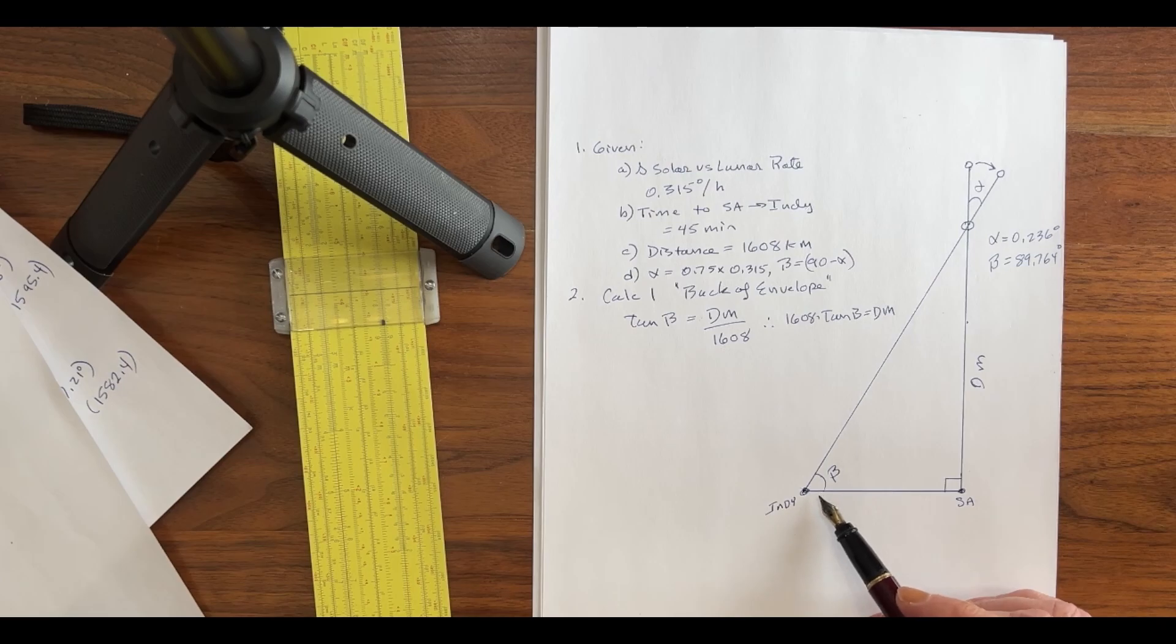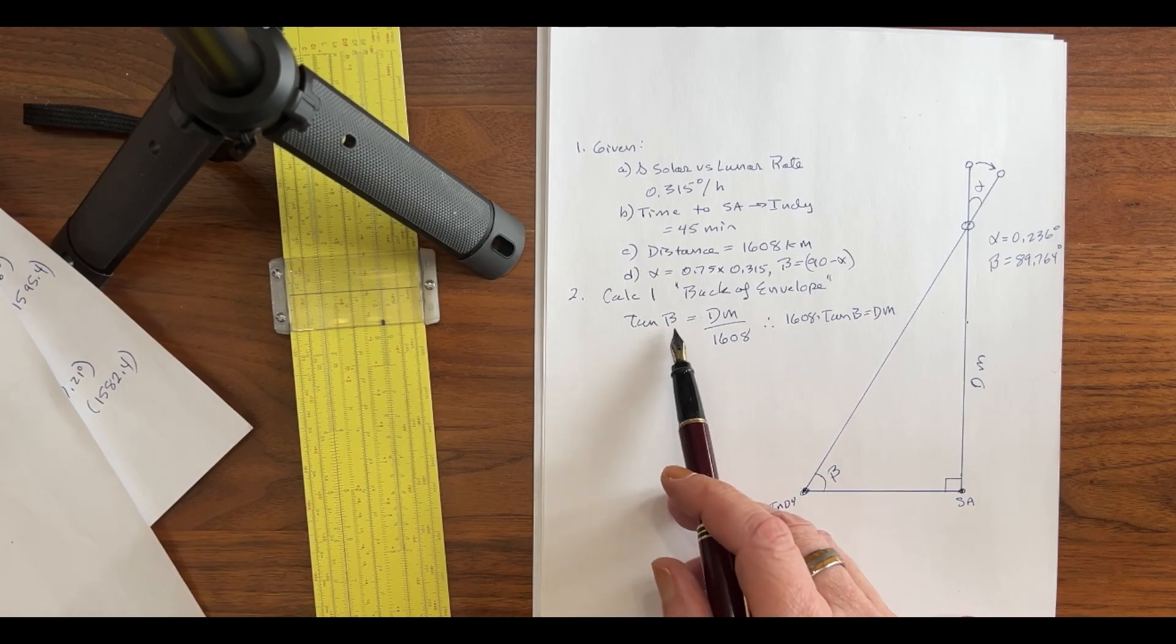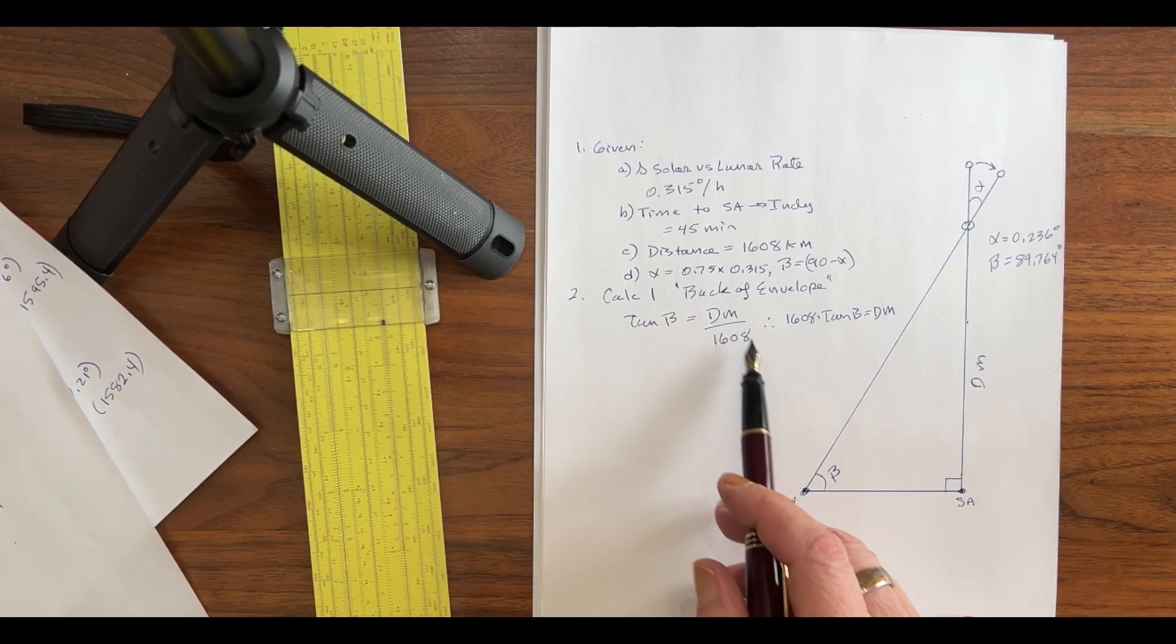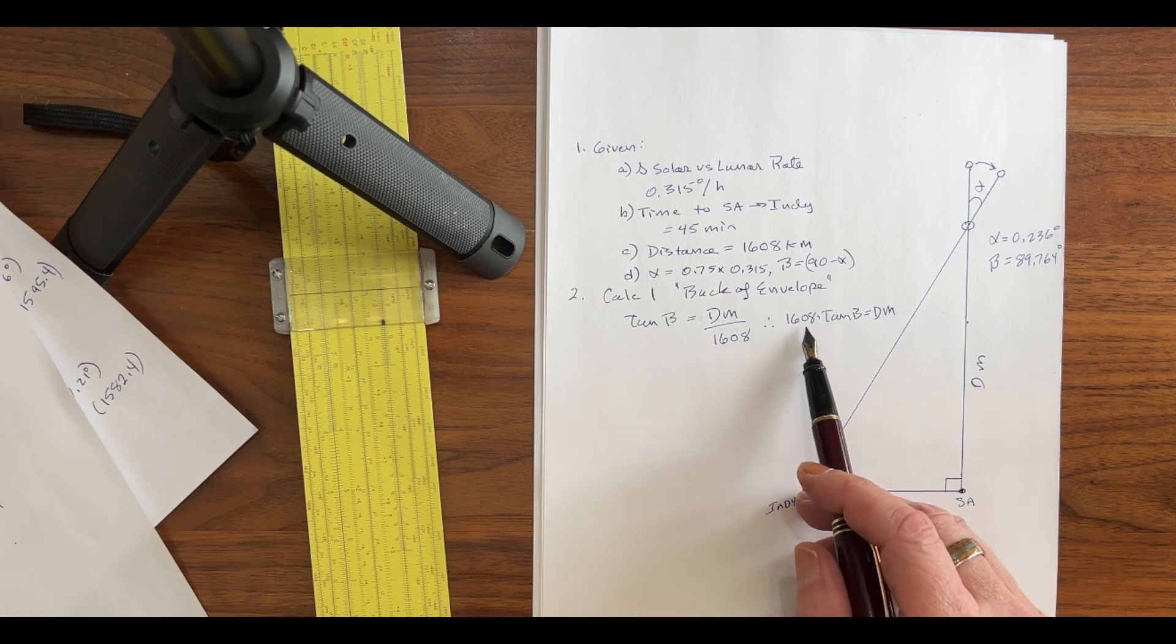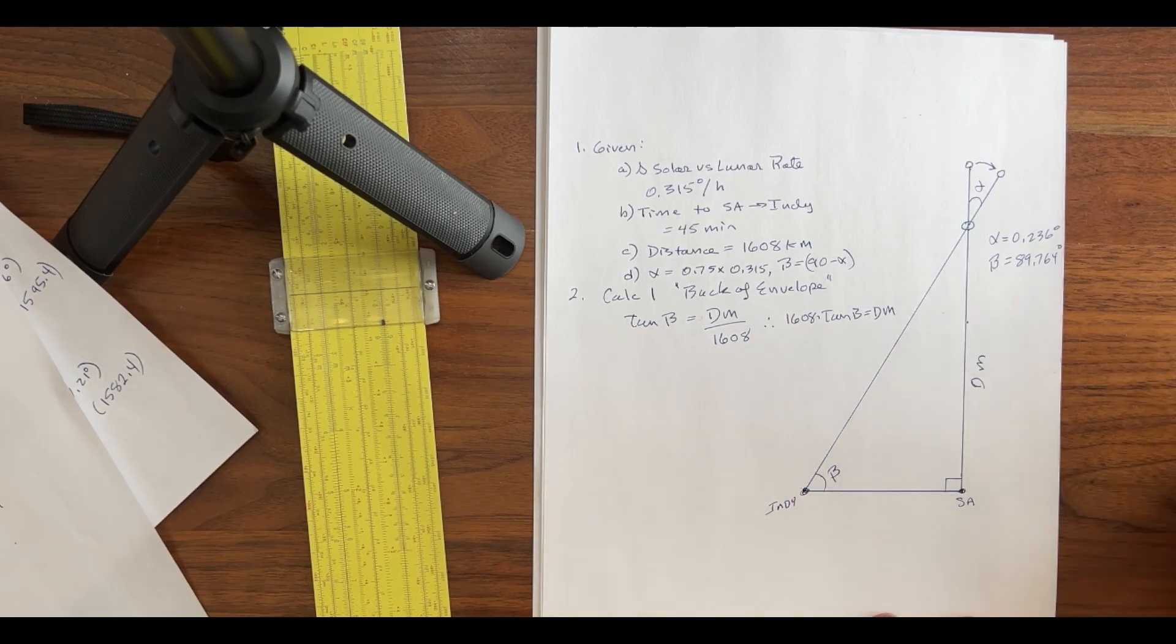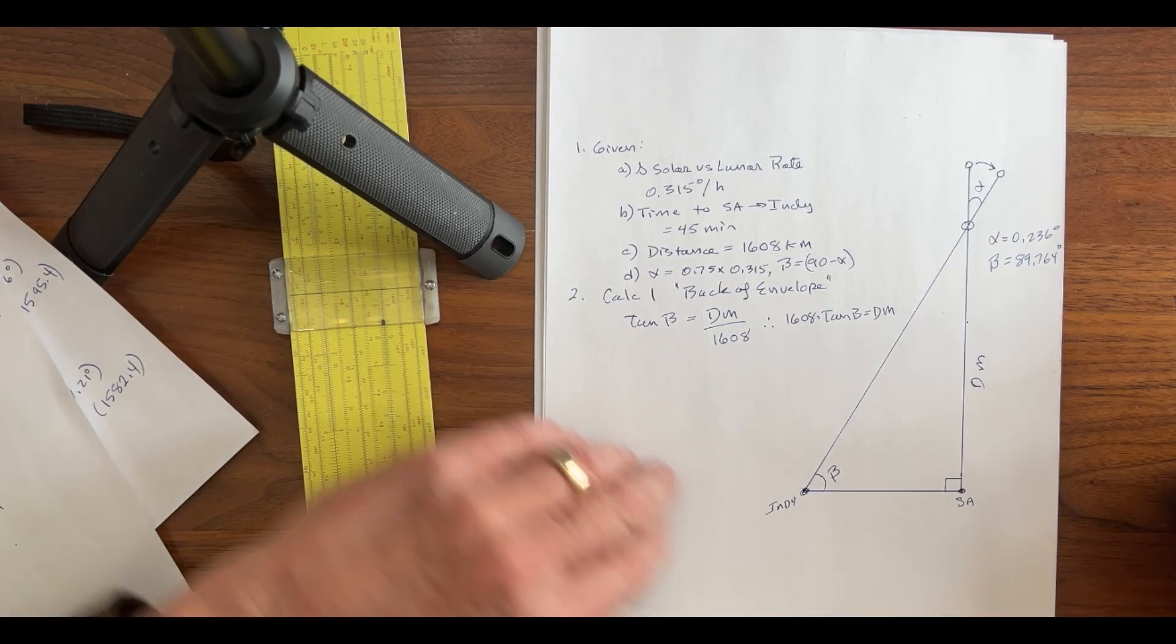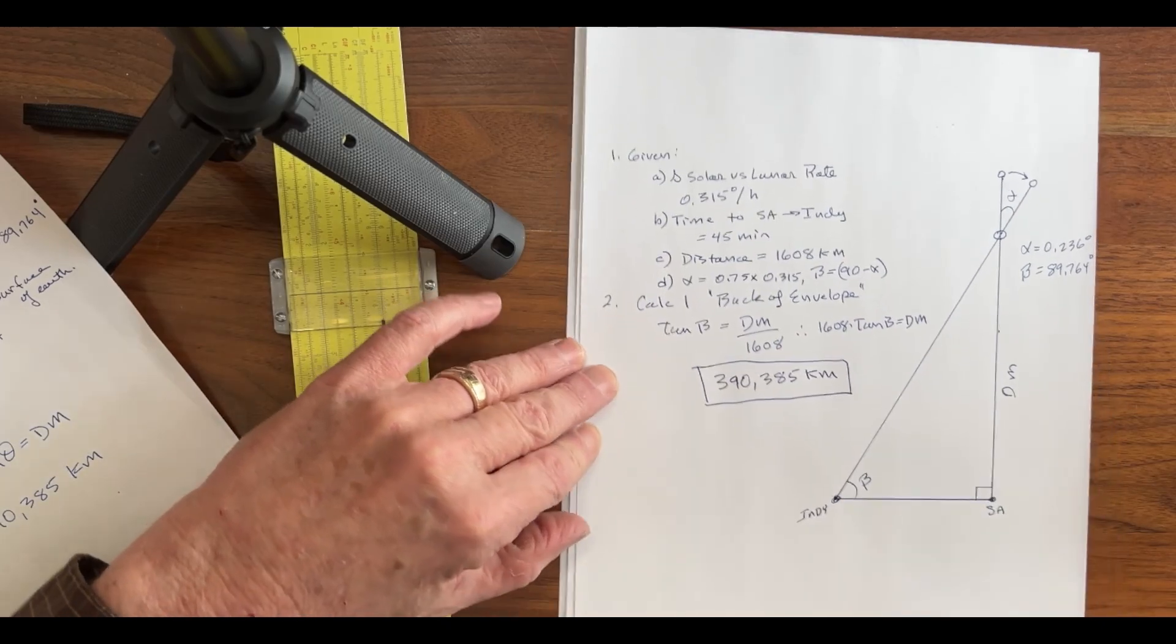So, have some fun with me. When looking at angle beta here, the tangent will be the opposite side over the adjacent side. So, the tangent of angle beta will be the distance to the Moon over 1608. If we take 1608 and multiply it by the tangent of angle beta, we get the distance to the Moon. What's that come out to? 386,000 kilometers. And quite frankly, that's pretty doggone close. But, I'm Bob the Science Guy, and we're going to do better.